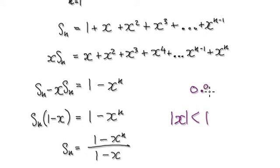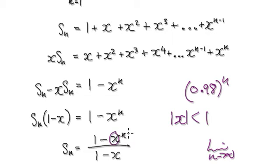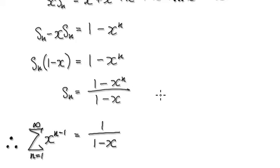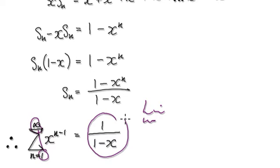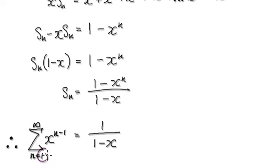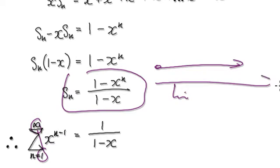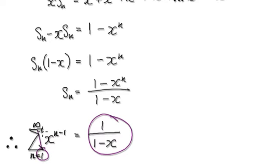Now when n heads towards infinity, provided the modulus of x is less than 1 — for example, if x is 0.98 — as you take the limit as n heads towards infinity, you have 0.98 raised to the power of n. As n heads towards infinity, 0.98 multiplied by itself, say 1,000 times, heads towards 0. So the x to the n term goes to 0, meaning the full summation from 1 to infinity equals our formula.